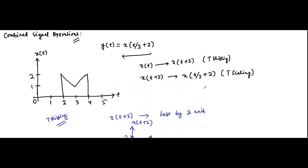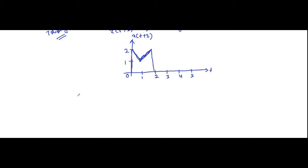After time shifting, we perform time scaling. In time scaling, the factor which is multiplied or divided by t plays an important role. Here, 2 is divided by t, which means each and every point on the time axis will get multiplied by that same factor — it is the opposite. If it is getting divided by t in the expression, it will get multiplied in the waveform time axis. So here we'll multiply each point on the time axis by 2.